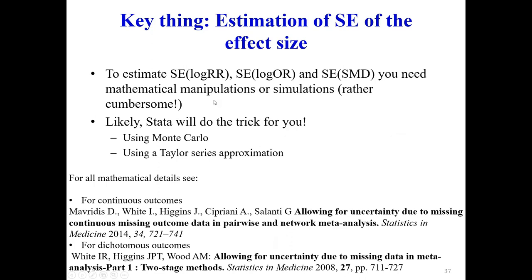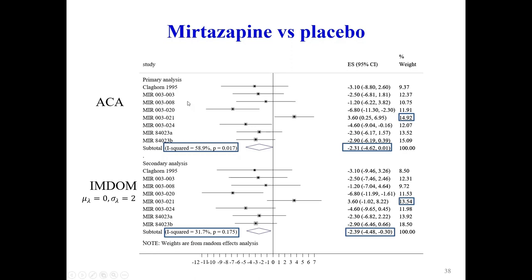To estimate the standard errors requires some complicated mathematical formulae. We provide two papers with all the details, using two different methodologies: one based on Monte Carlo and the other on Taylor series approximation. The software command will handle this for you. Once you provide the data for each trial — just as in a simple meta-analysis but additionally including the number of missing participants — you will get the adjusted effect sizes and adjusted standard errors.